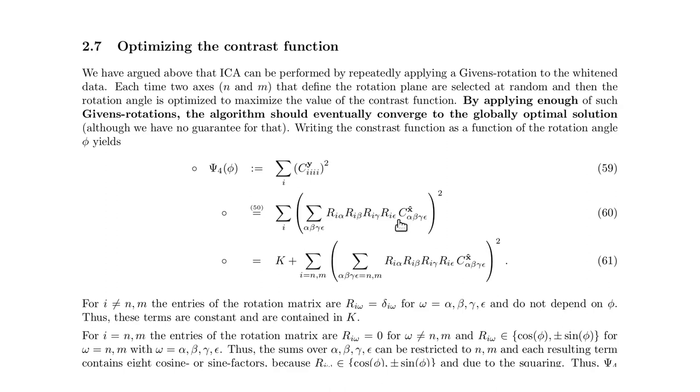The rotation matrix is given here, so that's the Givens rotations, and this is the expression that we have to calculate if you want to compute the value of the contrast function as a function of the rotation angle for one particular Givens rotation.